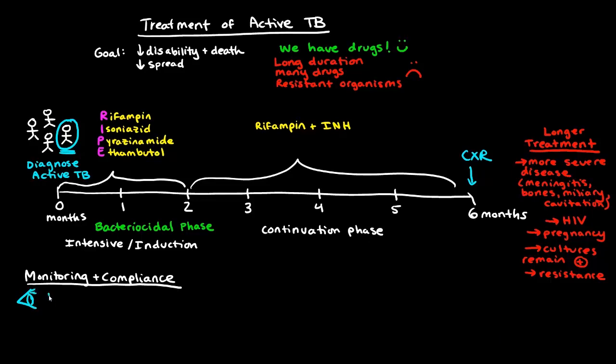Directly observed therapy means exactly what it sounds like: a healthcare provider is making sure the patient is taking their medication. This is important because it yields a higher cure rate and reduces the likelihood that patients will develop a resistant organism. Under DOT, patients can take their medication three times per week as opposed to every day, and the treatment appears equally effective. Patients need to be encouraged constantly to take their medication, with the reason underscored.